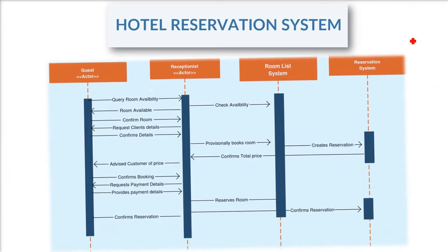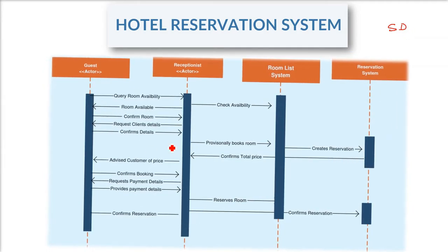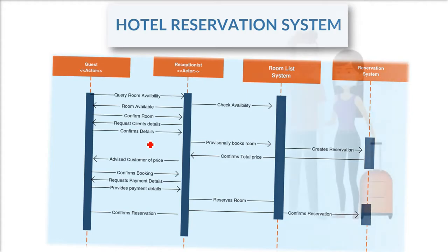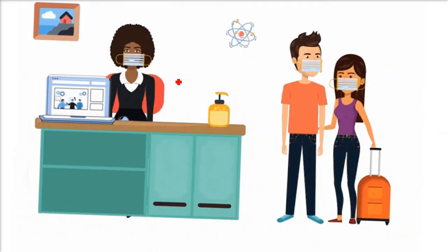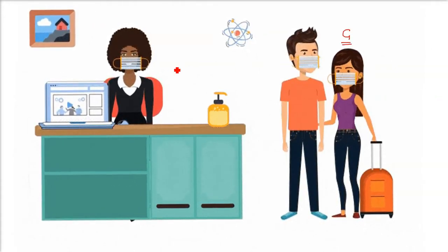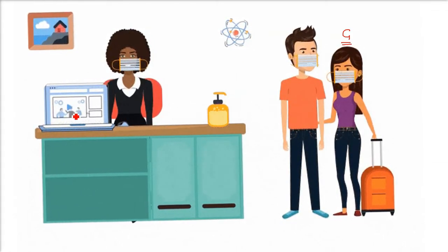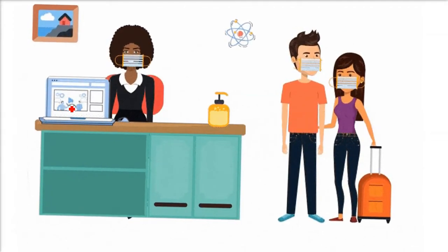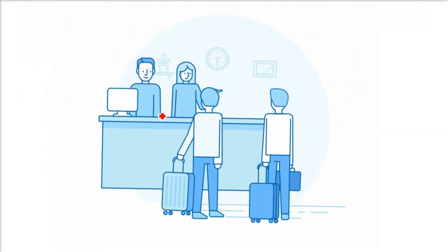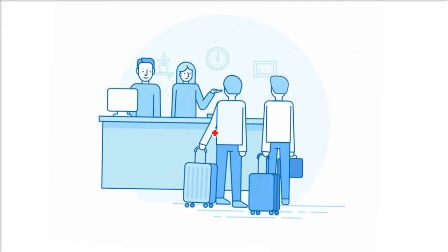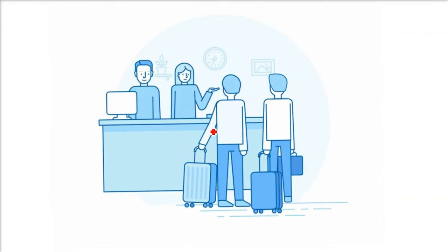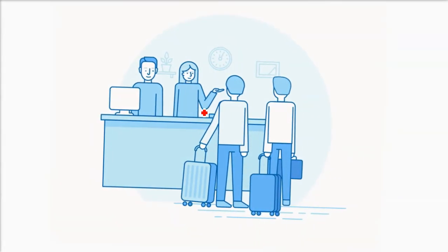We are going to make the sequence diagram for a hotel reservation system. We'll start with the actual scenario: whenever you go to a hotel, you are called a guest, so you are an actor. There will be a receptionist, who is also an actor. The software is called hotel management or hotel reservation software. We assume that first a room has to be available, then there will be identification of the guest, and finally payment. We are making a very basic sequence diagram.